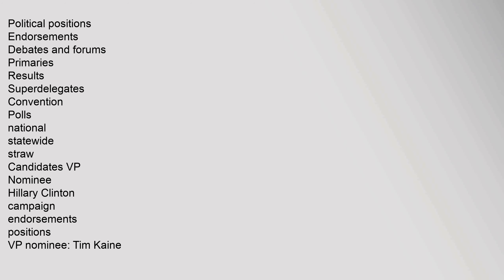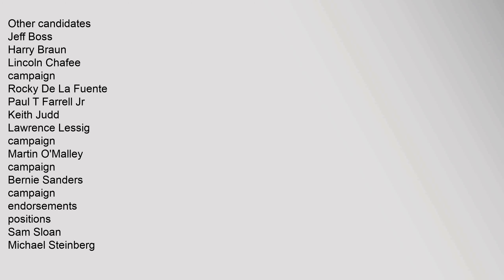Democratic Party: Political positions, endorsements, debates and forums, primaries results, superdelegates, convention, polls (national and statewide), candidates. VP nominee Hillary Clinton — campaign, endorsements, positions. VP nominee Tim Kaine. Other candidates included Jeff Boss, Harry Braun, Lincoln Chaffee, Rocky De La Fuente, Paul T. Farrell Jr., Keith Judd, Lessig campaign, Martin O'Malley, Bernie Sanders campaign, Sam Sloan, Michael Steinberg, Vermin Supreme, Jim Webb, Robbie Wells, Willie Wilson, and John Wolfe Jr.